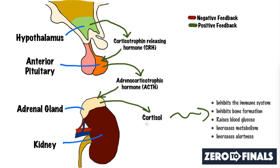Cortisol goes on to affect the rest of the body in various ways. It's essential that we have cortisol at all times — it fluctuates throughout the day to regulate our circadian rhythms. It's important in inhibiting the immune system, inhibiting bone formation, raising blood glucose, increasing metabolism, and increasing alertness. It plays a key role in the stress response to any stressful situation.